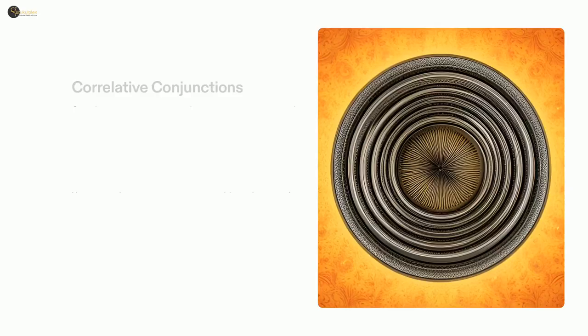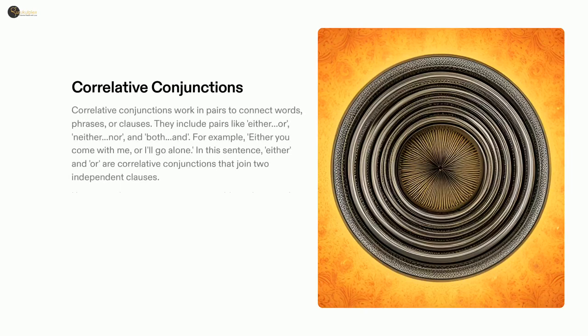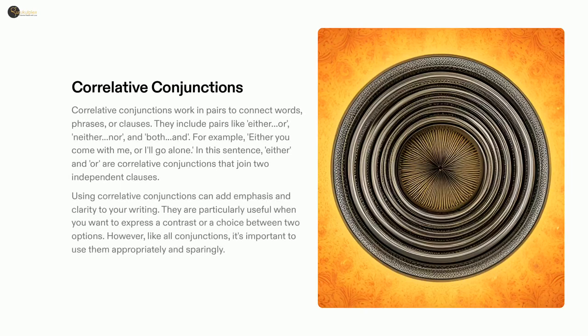Conjunctions can be a powerful tool to combine ideas and words into a concise and meaningful sentence. Take, for instance, a correlative conjunction like 'either/or', which can be used to emphasize the contrast or choice between two options.